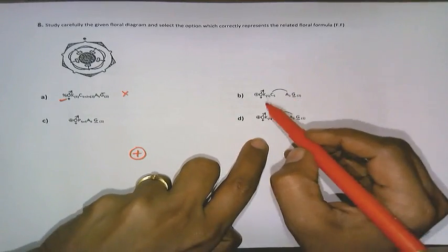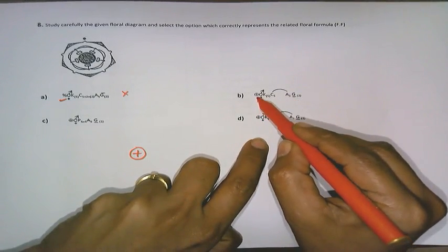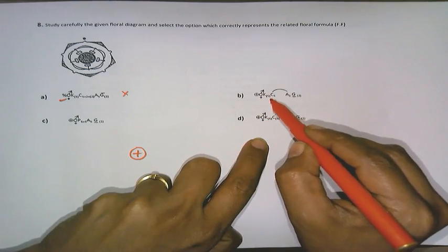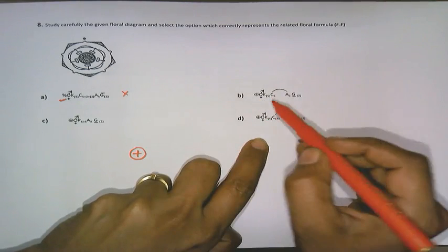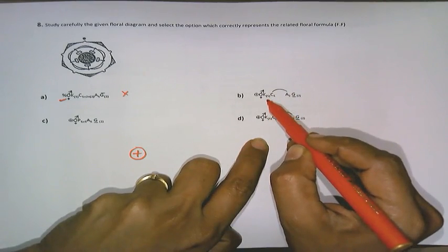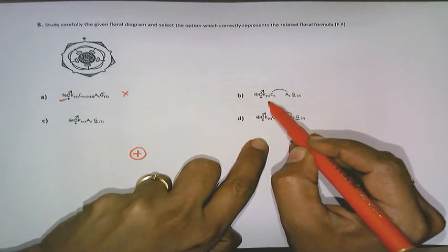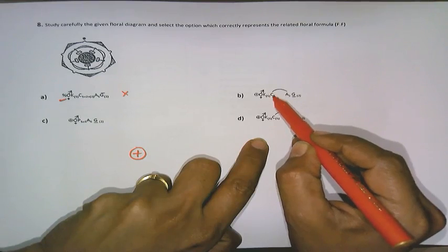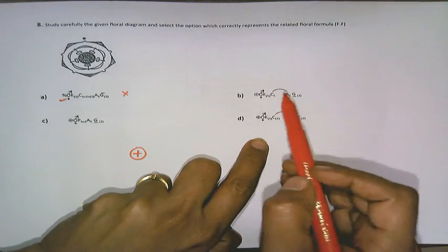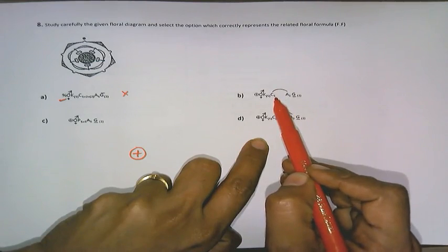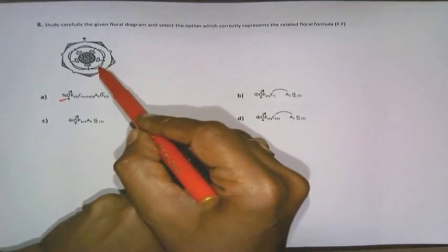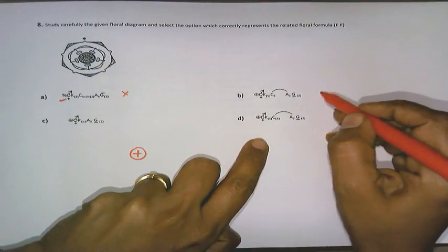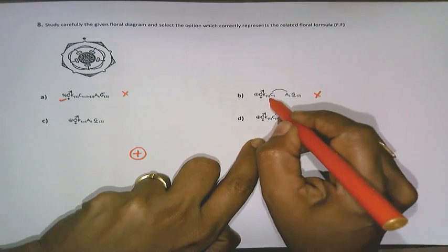As we move on to option B, regarding the symmetry, it is right. But as we move on to calyx that is united, K5 within brackets, but corolla is represented as C5 without the bracket. That means they are not united according to the formula. But the petals are united. So this option is also wrong because of corolla.